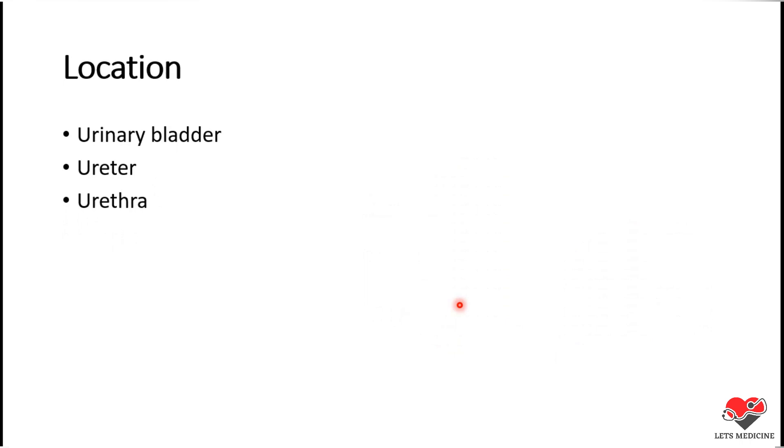Location of Transitional Epithelium: you can find it in the urinary bladder, in ureter, and in the urethra. So mainly the Transitional Epithelium is lining our urinary tract.